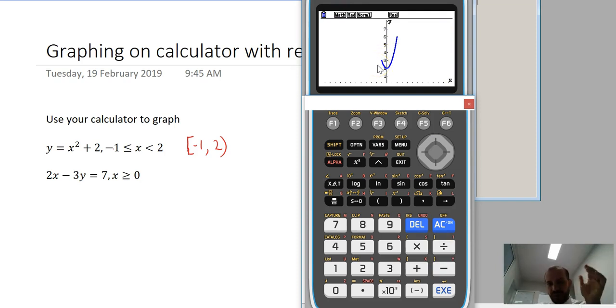And you can see that it's drawn a quadratic for us, but only the section between x is negative 1 and x is 2.